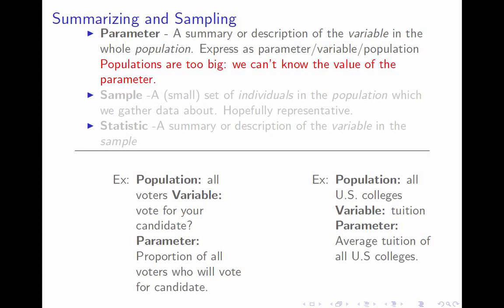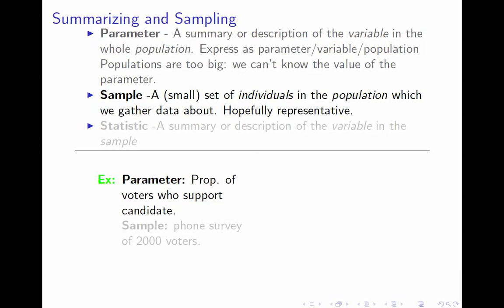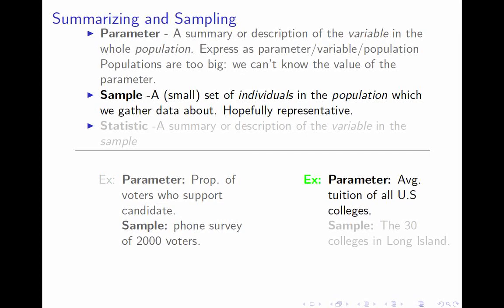This is the fundamental conflict of the course: we will always be interested in parameters and we will pretty much never know them. The basic strategy is to take a sample. A sample is a small subset of the population from which we actually gather data, and we hope it's representative. For example, a phone survey of 2,000 voters asking who they'll vote for is a sample. Or if you're interested in average tuition of all US colleges, looking up the 30 colleges on Long Island is a sample.